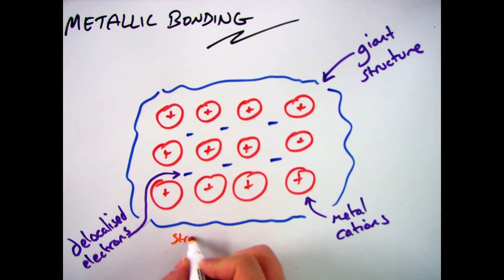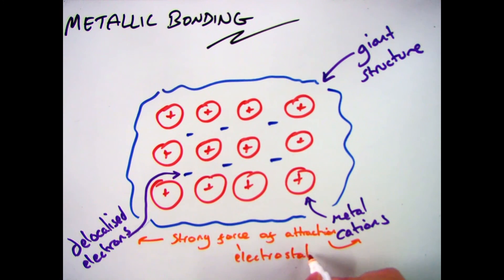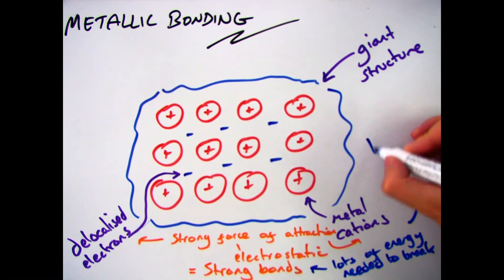Now we can use this information to explain why they have high melting points. And the key reason for this is there is a strong force of attraction between the delocalised electrons and the metal cations. This is called an electrostatic attraction. This gives it strong bonds. Now this means that lots of energy is needed to break these strong bonds which also means that it gives it high melting points and boiling points.